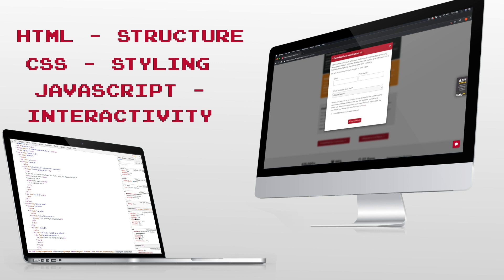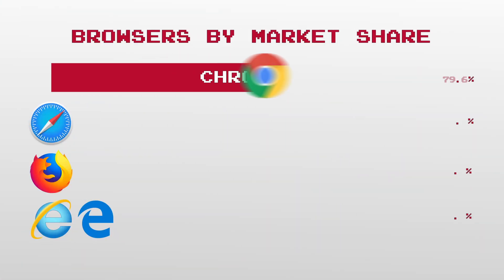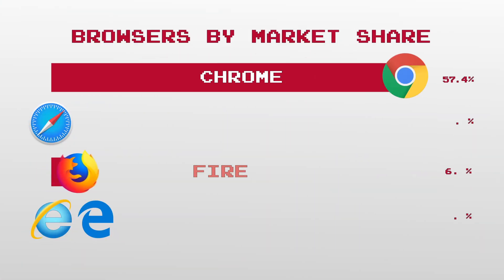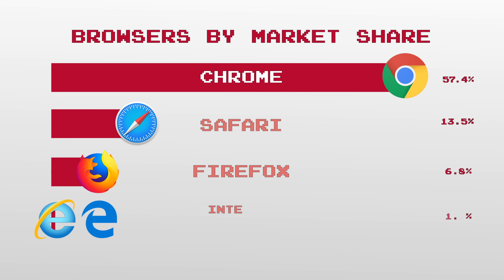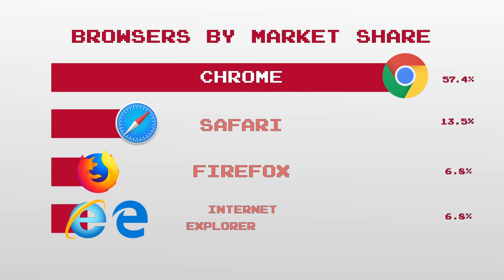And a browser is essentially a program which allows us to search the web. Examples of browsers include Google Chrome, Mozilla Firefox, Safari and Internet Explorer.